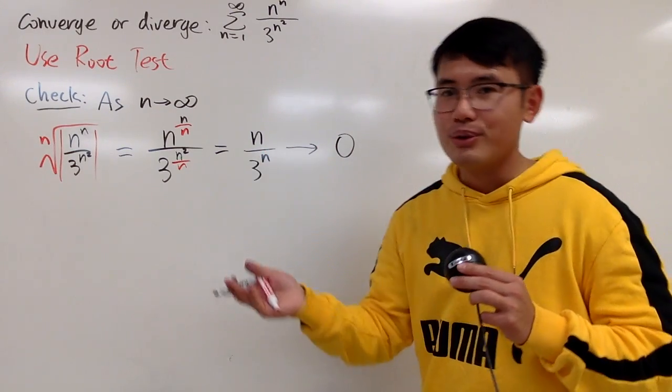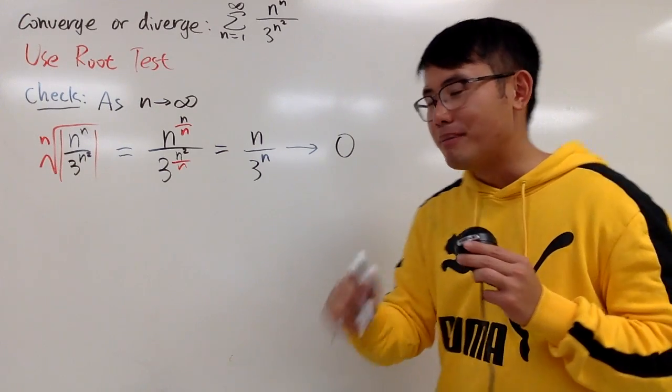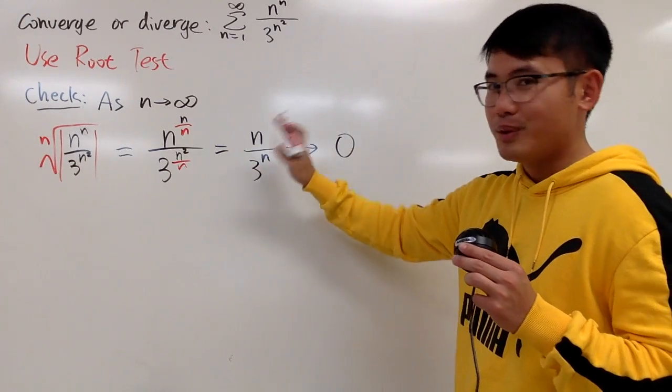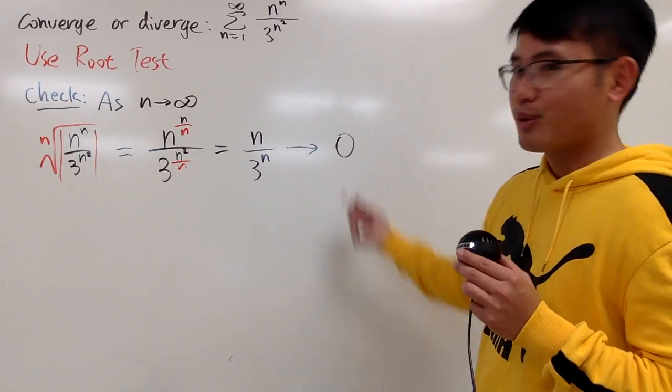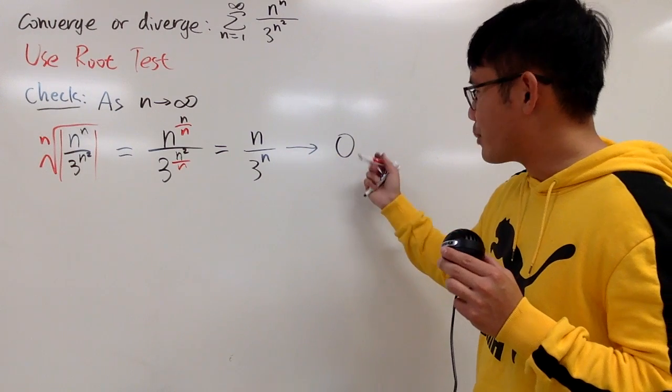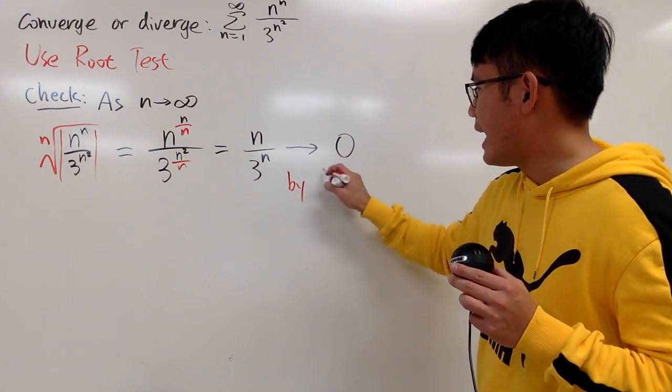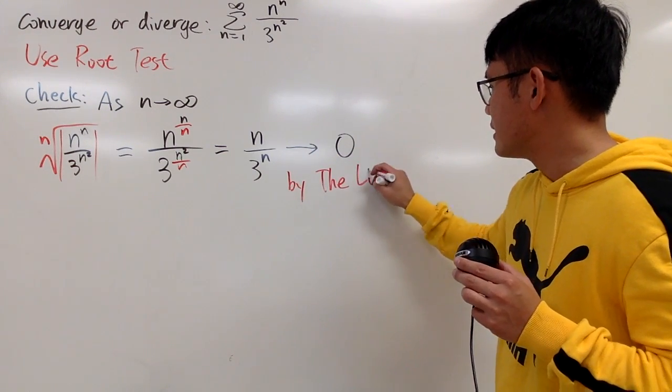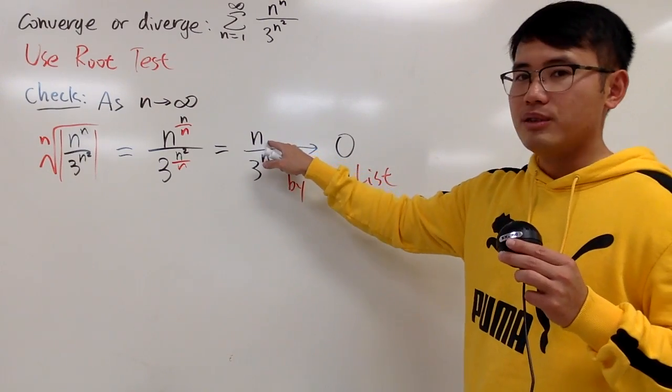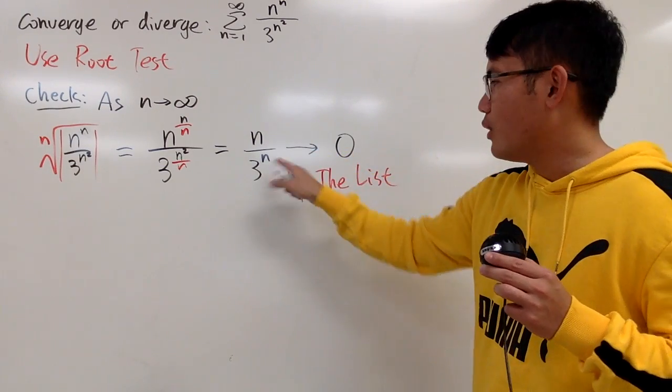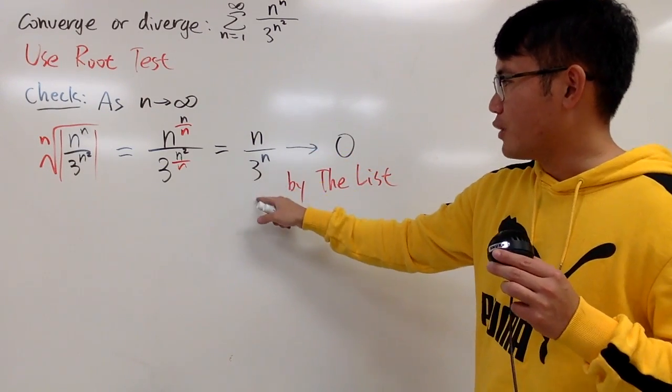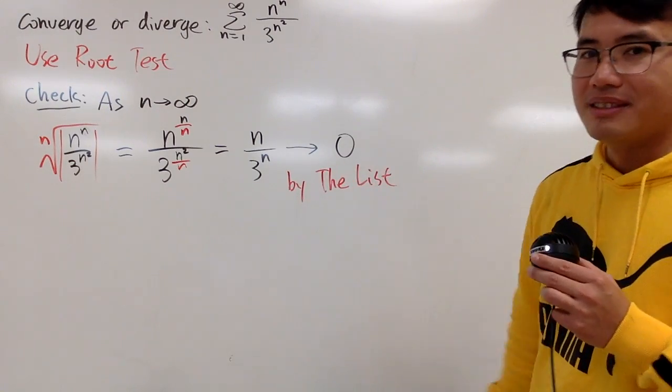You can also change this to x and then do L'Hôpital's rule. But for my class, usually when you see this kind of situation, you can just draw a conclusion real quick. This approaches 0, and you can just say by the list. Because this is just n to some positive power over some number bigger than 1 to nth power. This is the situation.